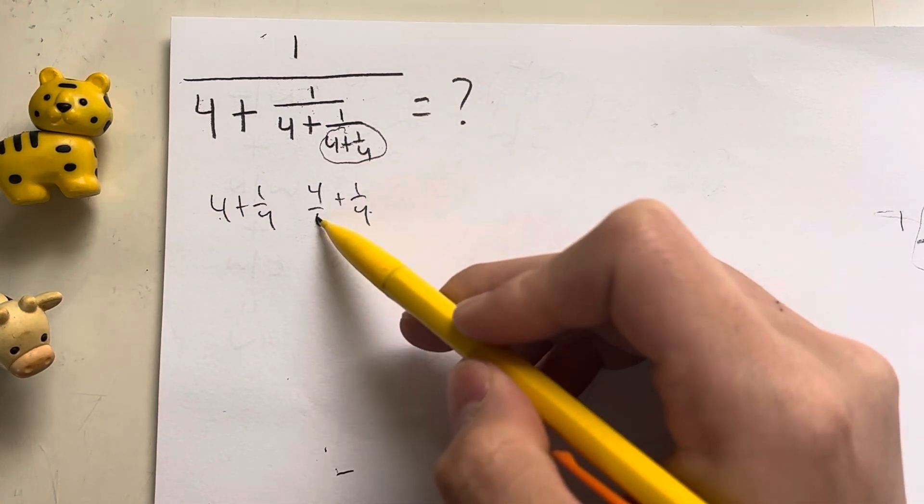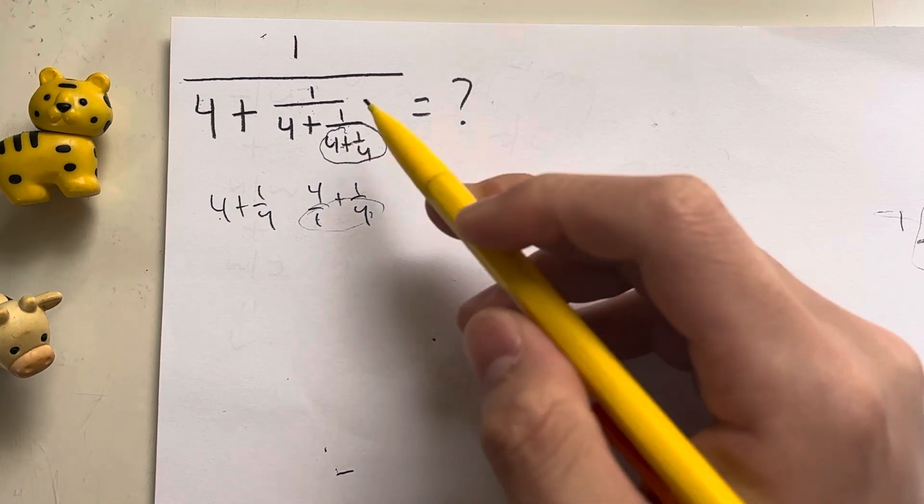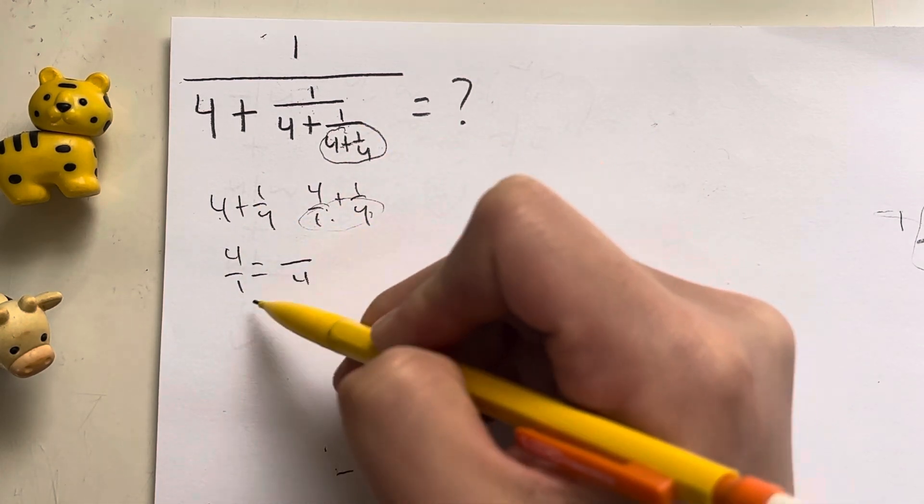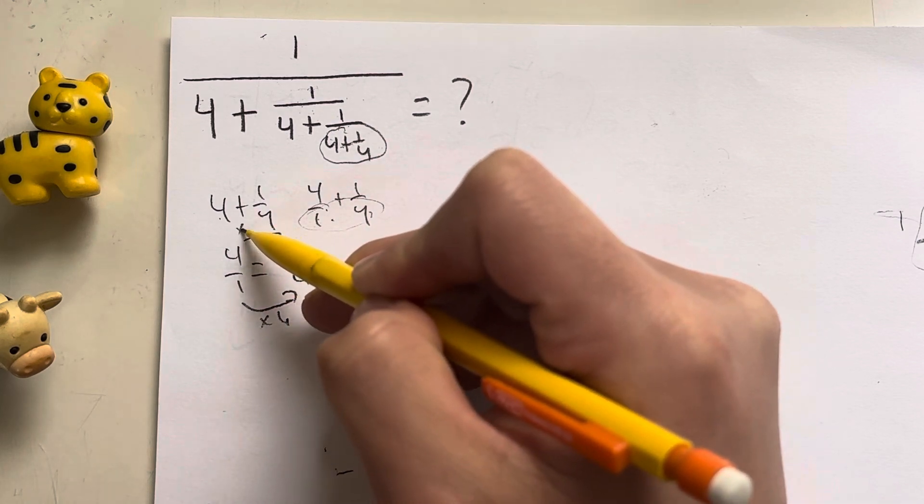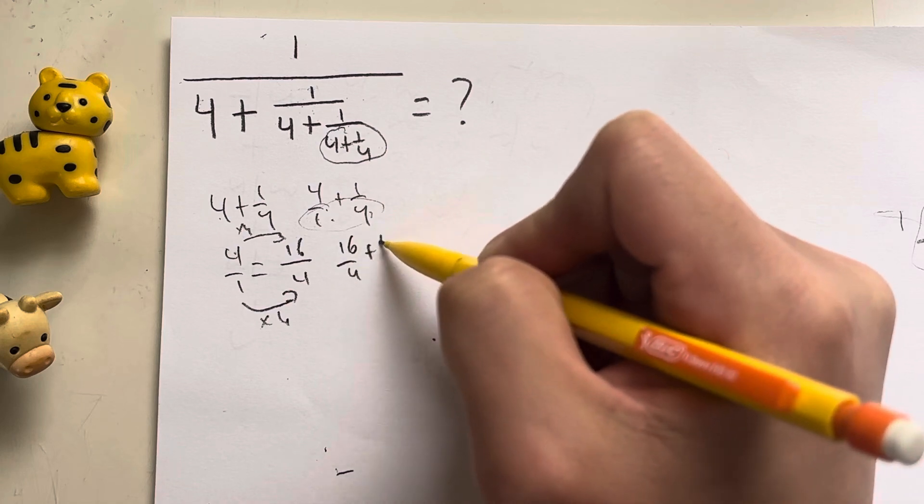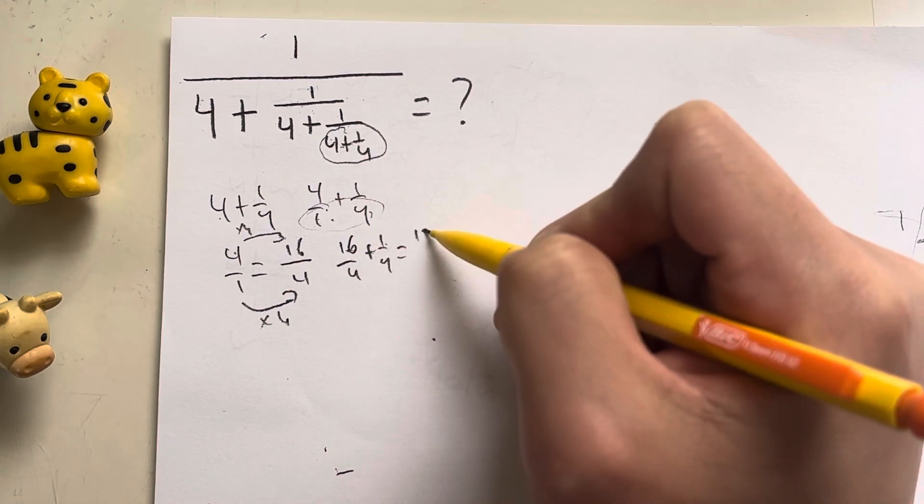And when adding fractions, we can't just add them because we need a common denominator, which in this case is 4. So 4 over 1 is equal to what over 4? 1 times 4 is 4, so I could do the same thing, times this by 4. 4 times 4 gives me 16. So 16 over 4 plus 1 over 4. 16 plus 1 is 17 over 4.